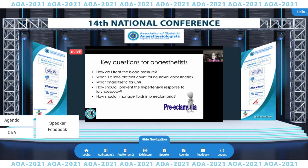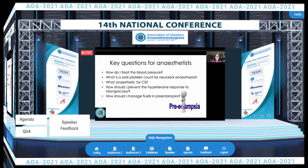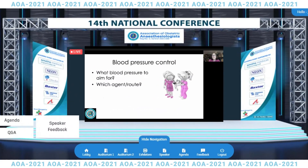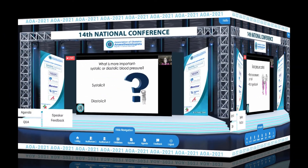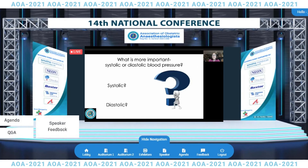Let's look at some key questions for anaesthetic practice. First of all, how do I treat the blood pressure? To answer this, we need to consider two elements: what blood pressure to aim for, and what drug and route to use. I want you to consider what is more important — systolic or diastolic hypertension. In preeclampsia and cerebrovascular disease, preeclampsia is the biggest single risk factor for stroke in women of childbearing age, and haemorrhagic stroke is the most common type.